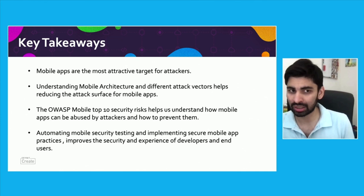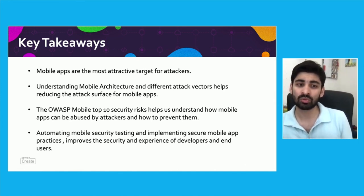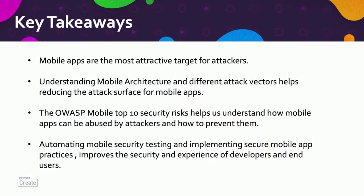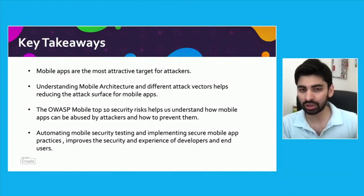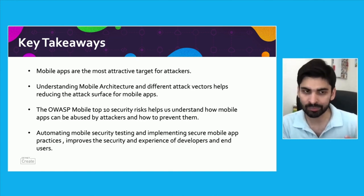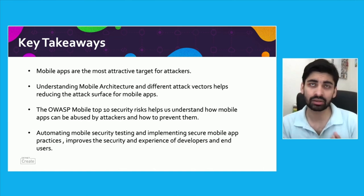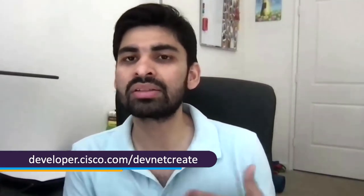To conclude, here are four key takeaways. Mobile apps are now the most attractive targets for attackers. As a developer, it's important to understand mobile architecture and the different attack vectors. The OWASP Top 10 is a great resource to understand how mobile apps can be abused. There are many open source tools to automate mobile security testing and implement a secure development lifecycle. Commercial tools like NowSecure and Ostorlab exist, but if you're new to mobile app security, start with open source tools to understand where your app's security stands. Thanks for your time.